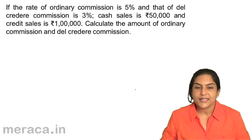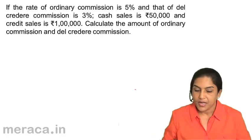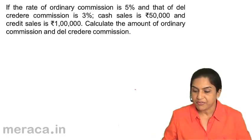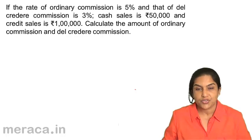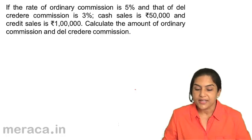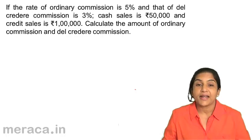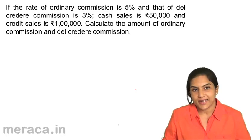Let us see how commission is computed. If the rate of ordinary commission is 5% and that of Del Credere commission is 3%, cash sales is 50,000 and credit sales is 1 lakh. Calculate the amount of ordinary commission and Del Credere commission.